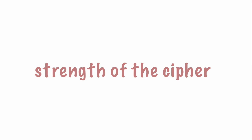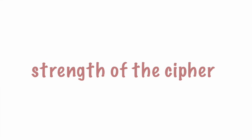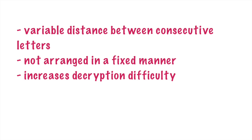What makes the rail fence cipher better than ciphers like the saw-tooth cipher, also known as the scissor cipher, is that there is a variable distance between consecutive letters, done by arranging the letters in a zigzag manner from up to down and then up, instead of being arranged in fixed vertical columns.